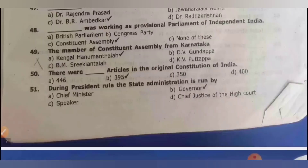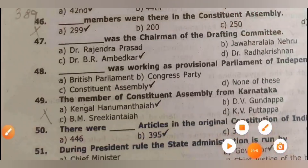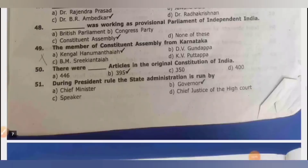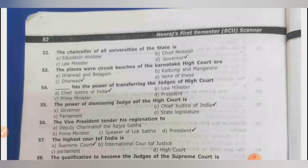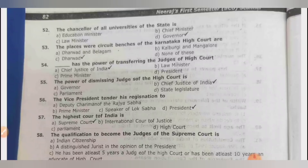The member of the constituent assembly from Karnataka is K.C. Reddy or Kengal Hanumanthaiah. There were 395 articles in the original constitution of India. During president's rule, state administration is run by the governor. The chancellor of all universities of the state is the governor. The circuit benches of the Karnataka High Court are at Dharwad. The chief justice of India has the power to transfer judges of the High Court.